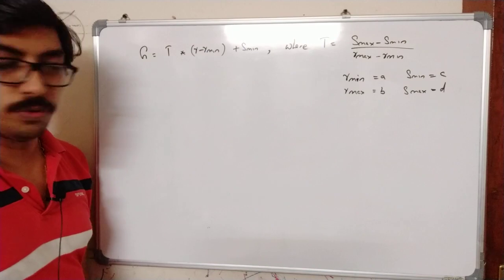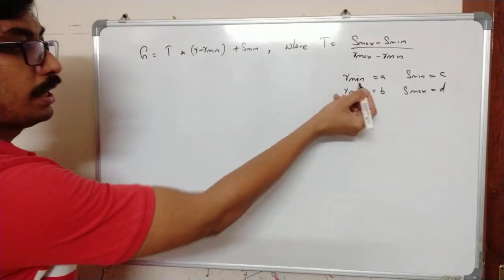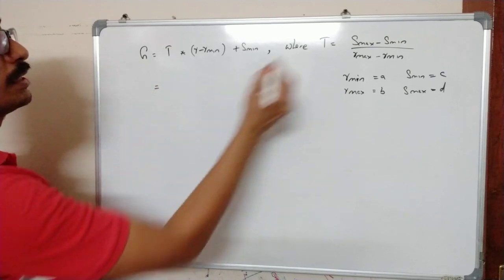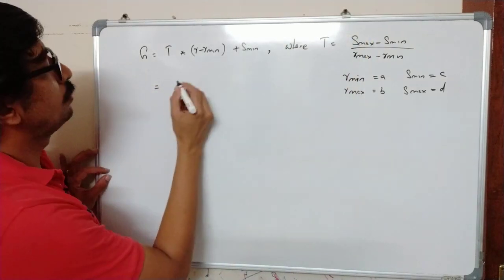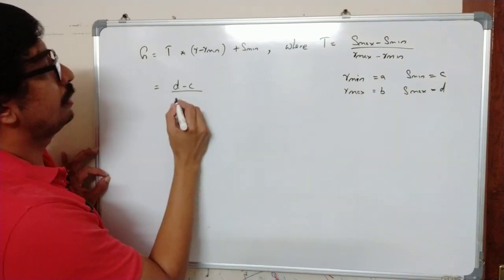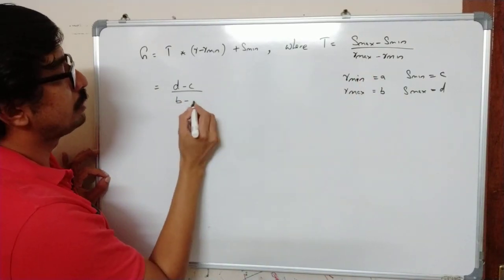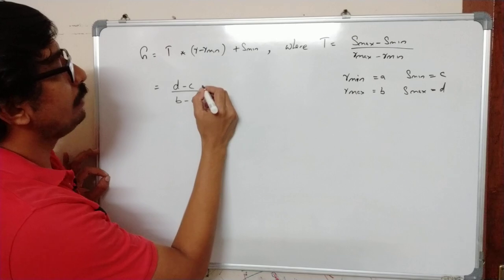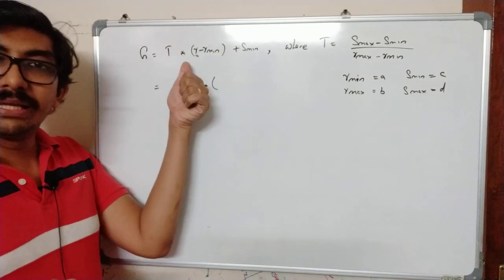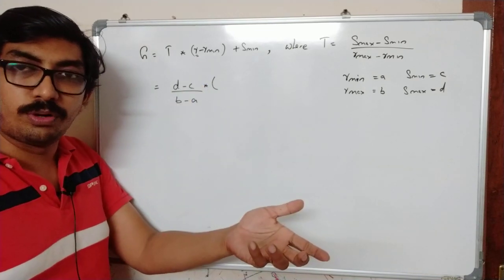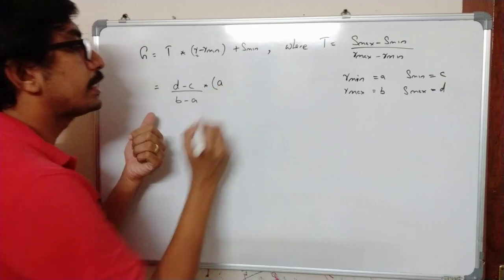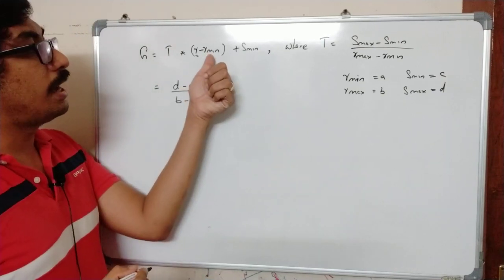So we will see whether this works. Assuming R min as A, we will find out the new value: that is (S max minus S min), which means (D minus C) divided by (R max minus R min), that is (B minus A), times (R minus R min), where R is the gray level intensity to be found out.